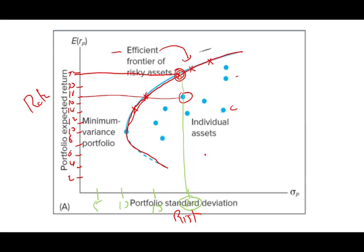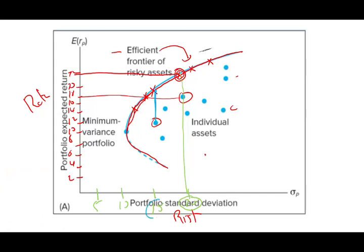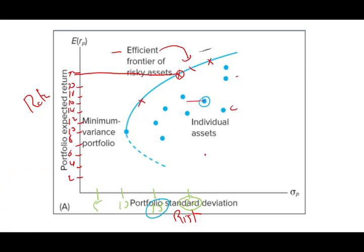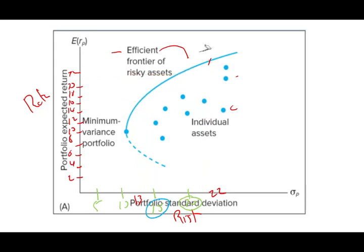We can also compare another asset: two investments both have a standard deviation of 15%, but the one on the efficient frontier has a higher return. Or consider two investments with the same return of 10% — the one on the frontier has a standard deviation of about 13, while the other has a standard deviation of 22. Obviously you prefer the one with the lowest risk for the same return. Anything inside the line is considered suboptimal to the efficient frontier.